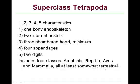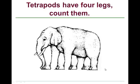Here we can see that tetrapods have four legs — let's count them. One, two, three, four... but there's another one, five. Kind of an interesting dilemma there.